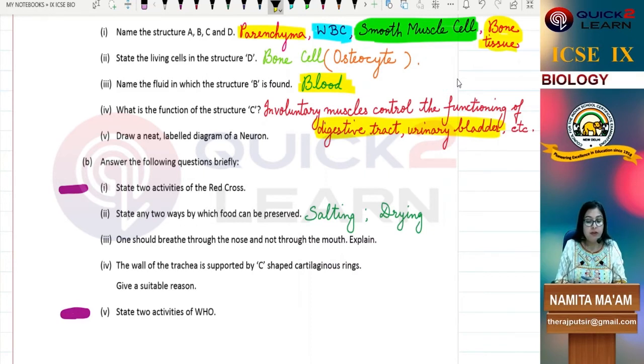State two activities of the Red Cross. This is not in your syllabus, but Red Cross activities you need to know: providing health services, providing medicine, conducting awareness programs in rural areas, making people aware of their health, especially females in rural areas.